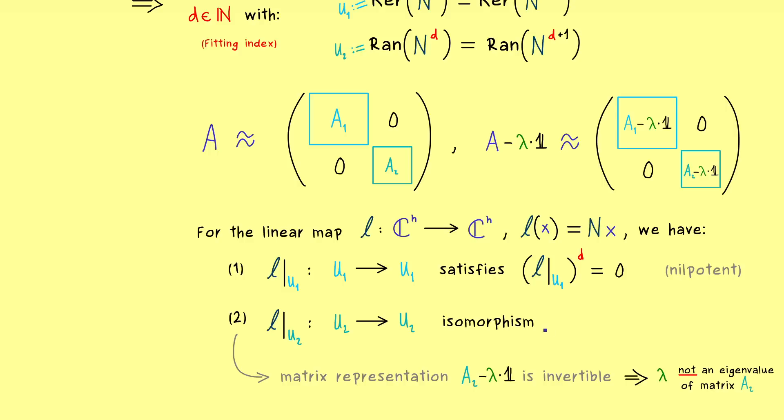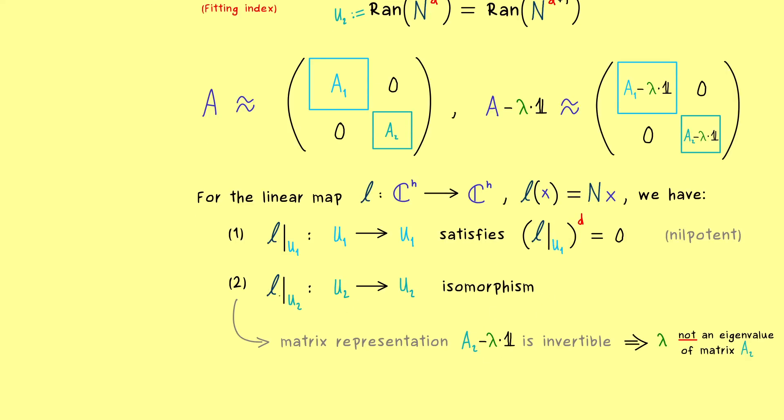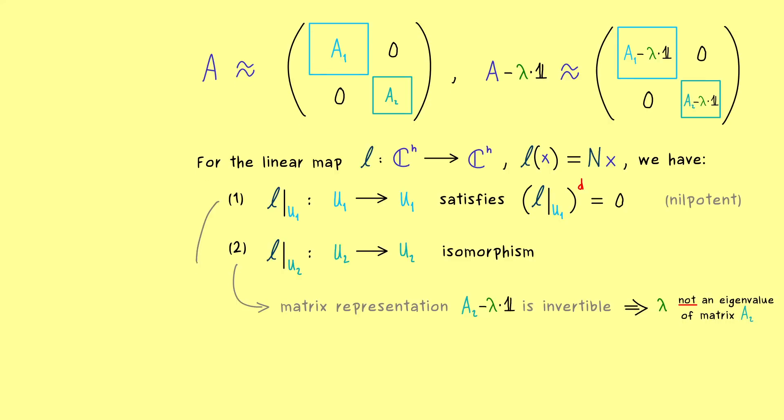And now the question is, how many times do we find lambda in the first block matrix? And also this we can immediately answer, because we have a nilpotent map.